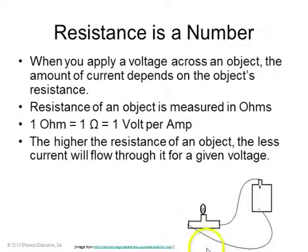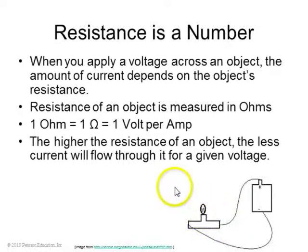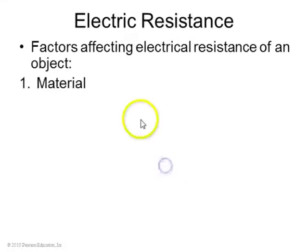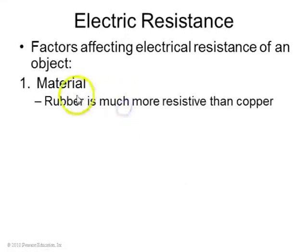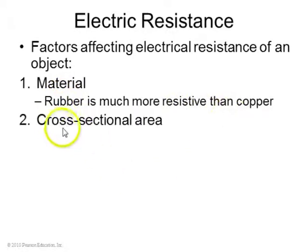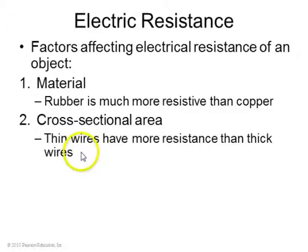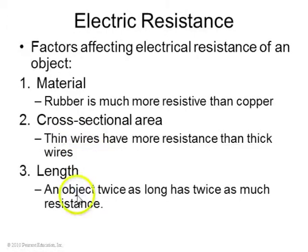The higher the resistance of an object, the less current will flow through it for a given voltage. Factors that affect resistance include what the object is made out of — rubber has more resistance than copper — its cross-sectional shape, since thin wires have more resistance than thick wires, and its length, since longer wires have more resistance than shorter wires.